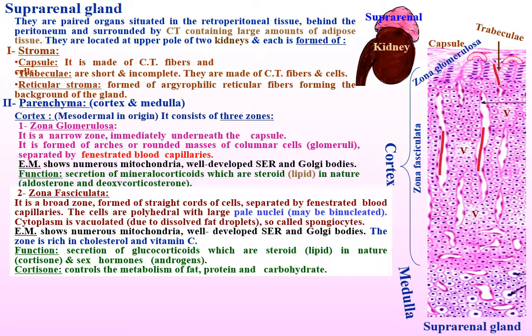By electron microscopy, the cells show numerous mitochondria, well-developed smooth endoplasmic reticulum and Golgi bodies. This zone is rich in cholesterol and vitamin C. Function: secretion of glucocorticoids, which are steroid and lipid in nature, such as cortisone and sex hormones — androgens.